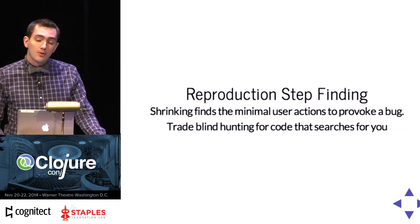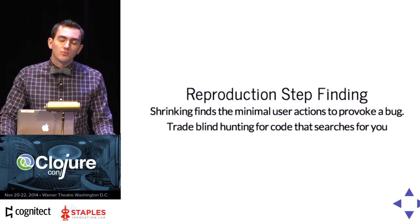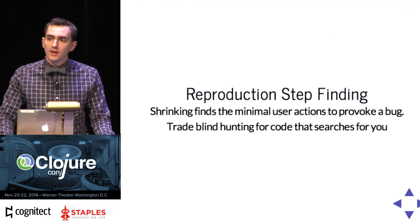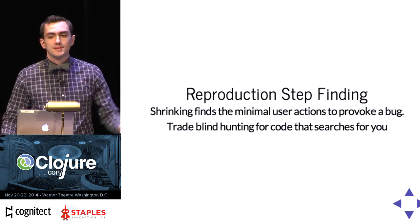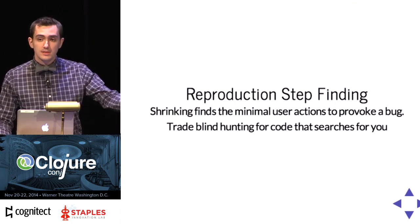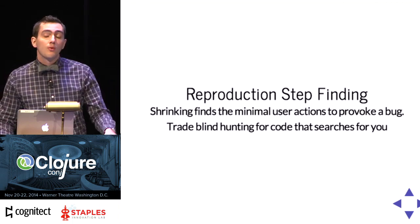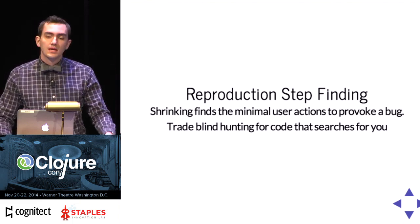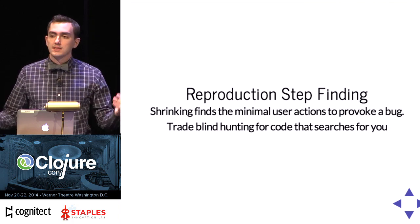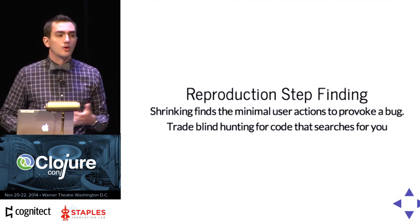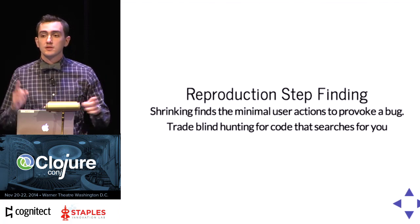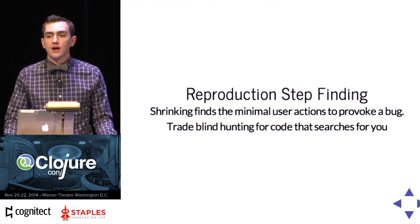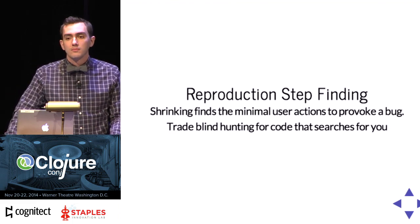But if you can get your test to hammer your application and somehow point it in a direction where it can provoke that problem, the shrinking will pull it down. Instead of getting 10 steps to reproduce it, you can get two steps. We have used this successfully to debug user-reported errors in production — well, against a local instance based on the user report. I modify my tests, start it, go get coffee, come back in 20 minutes and it says 'here are the two things you do: move this story from here to here, start that one, refresh your browser.' That's four hours of debugging, gone. You're trading a blind human hunt for a blind code hunt, and a computer can do blind random things much better than a human being.